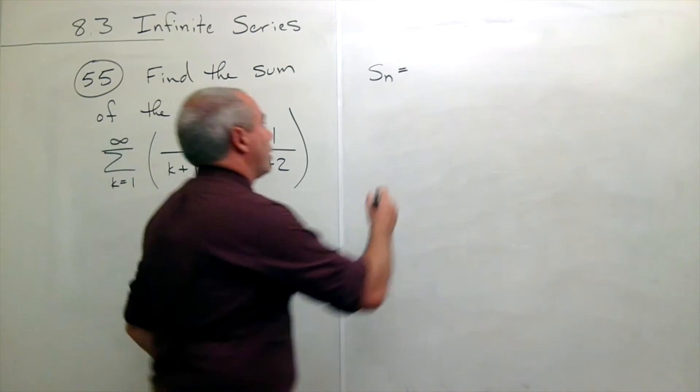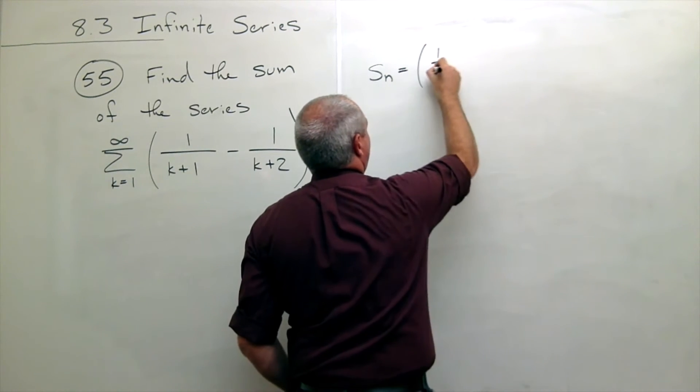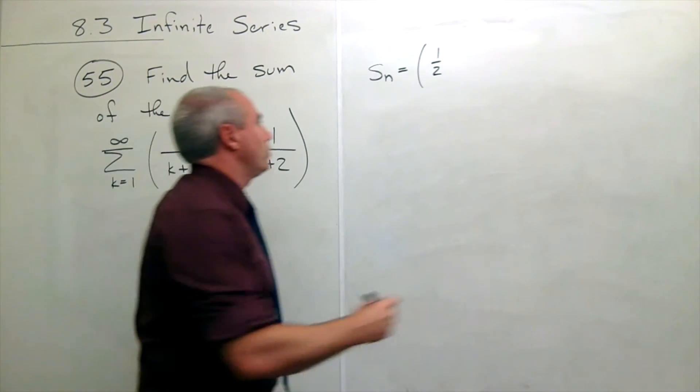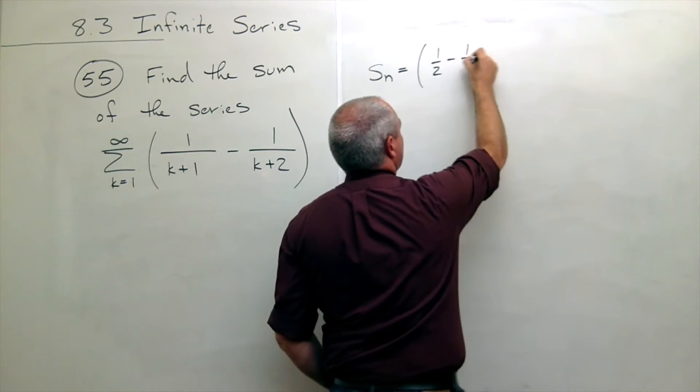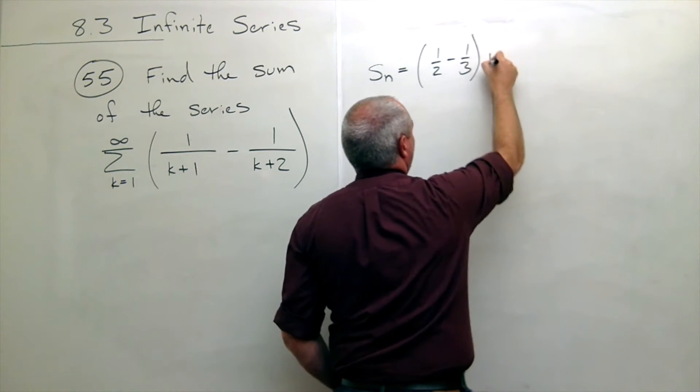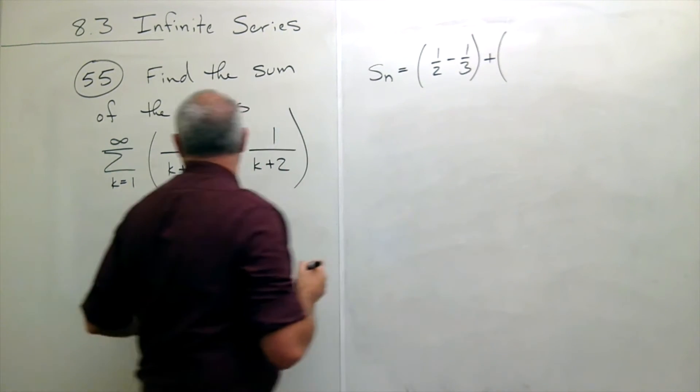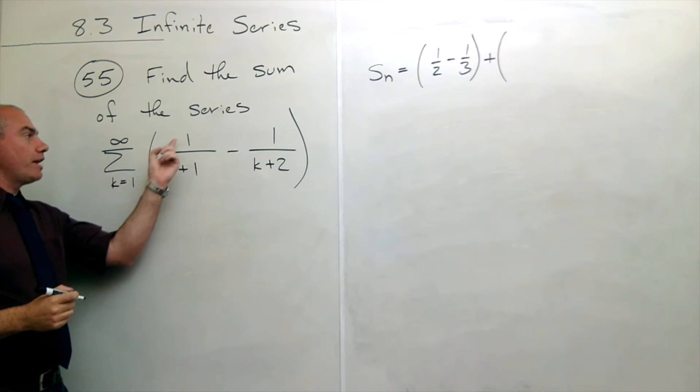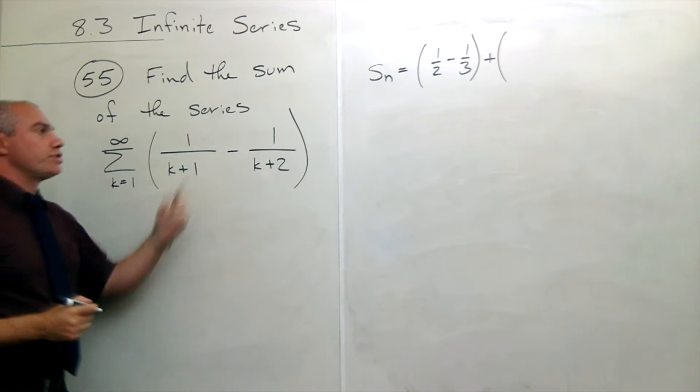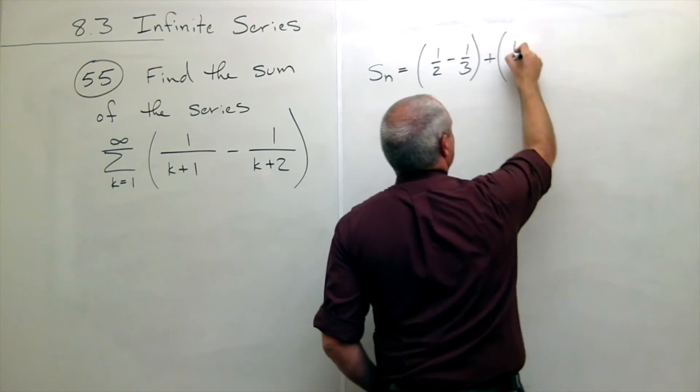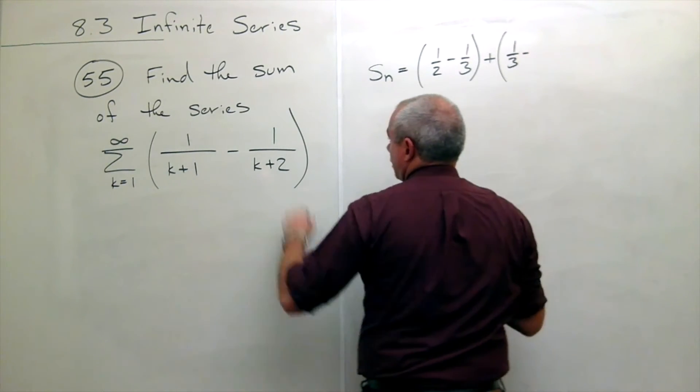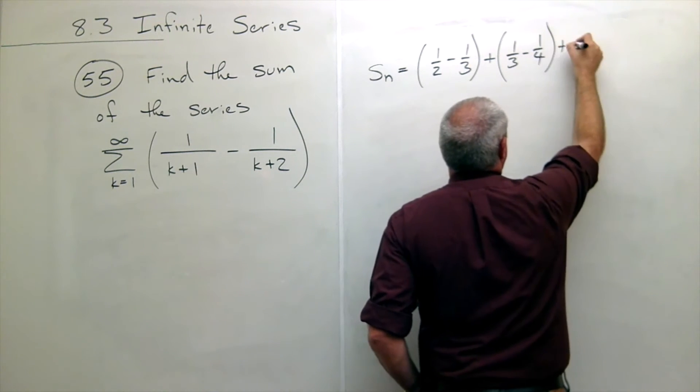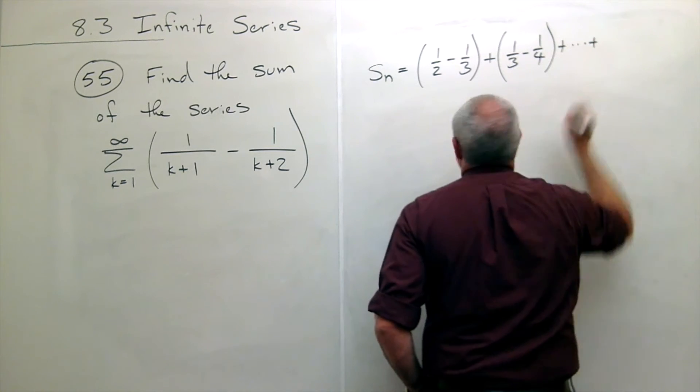So if k was 1, I'd get 1 over 1 plus 1, or that would be 1 half, minus 1 over 1 plus 2, or minus 1 third. Plus then I'd add on when k is 2. If k was 2, I get 1 over 2 plus 1, which is 1 third, minus 1 over 2 plus 2, which is 1 fourth. And we would keep on doing that.